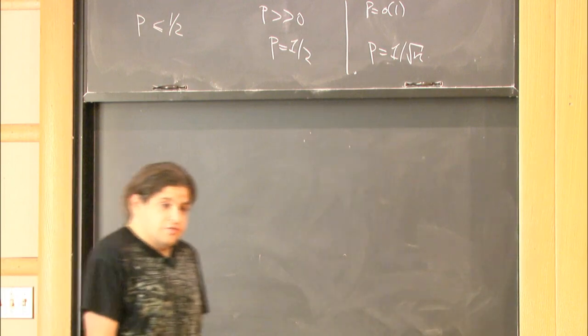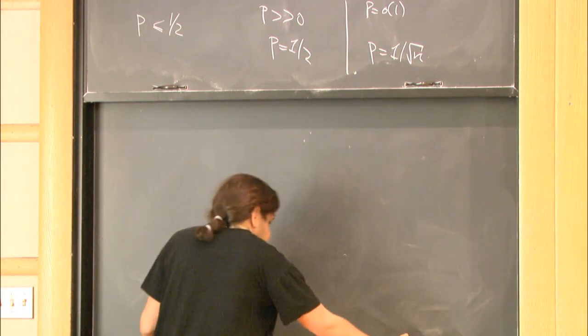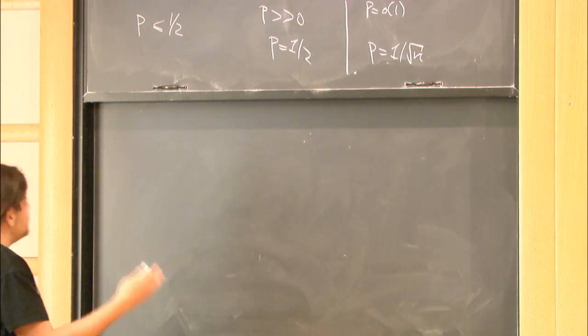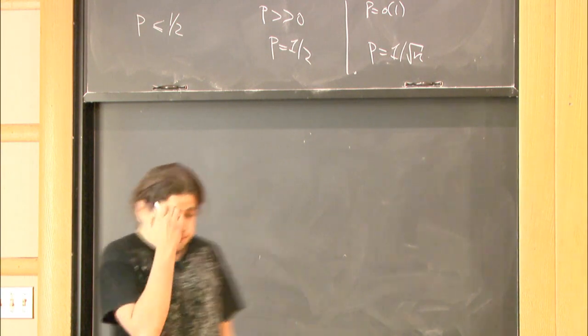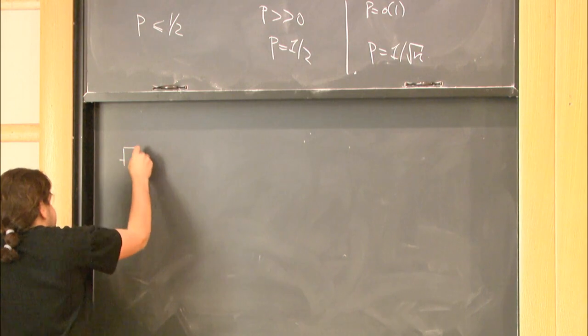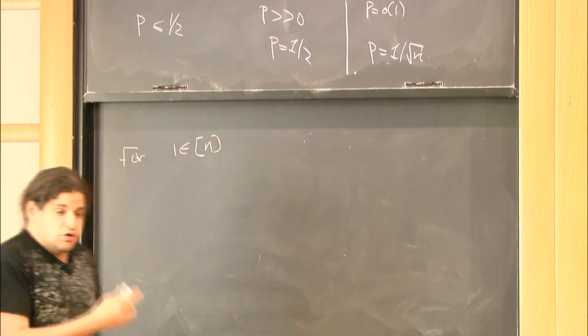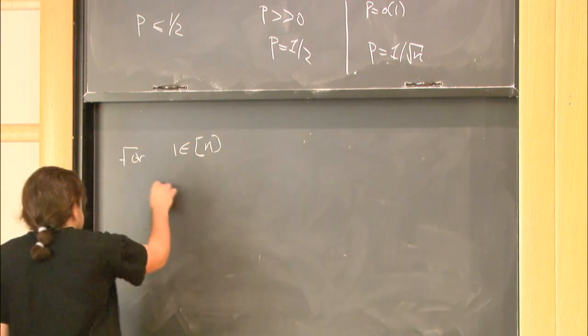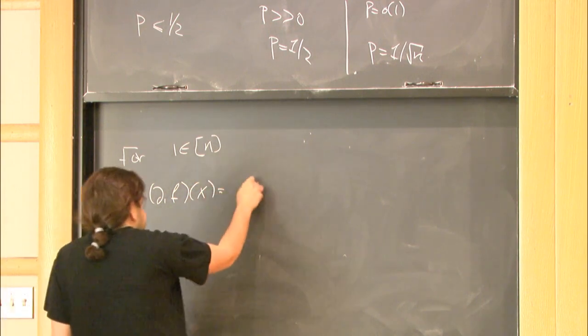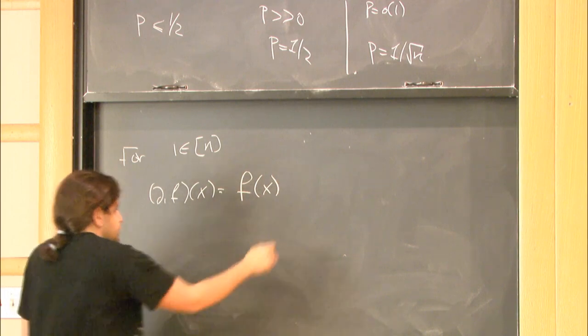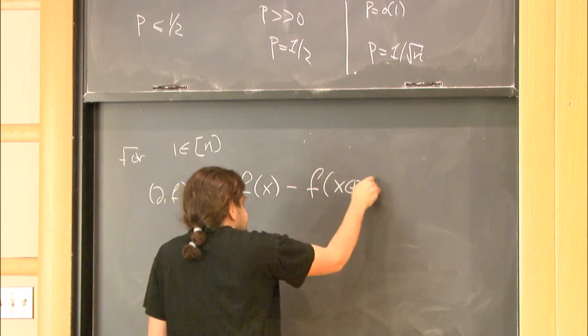Once we have a boolean function f, we can define various measures of interest. Probably the most natural measure we can come up with is ask how much does it depend on each one of its inputs. So, for each coordinate i, to measure how much f depends on the coordinate, we define the derivative, the descriptive derivative of the function, which is the difference between the value that f gets at a point x and the value that f gets at a point x when we flip the i-th bit.